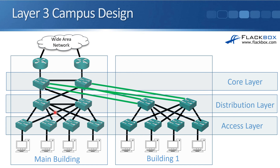One more thing: the default gateway is no longer going to be on the distribution layer switches. With layer 3 on the access layer, the default gateway for your end hosts is going to be on the access layer switches. You'll have an IP subnet down at the access layer and a different IP subnet above it, so the default gateway must be in the same subnet as the hosts — configured on the access layer switches — with routing and layer 3 links everywhere above that.